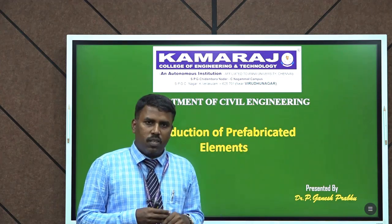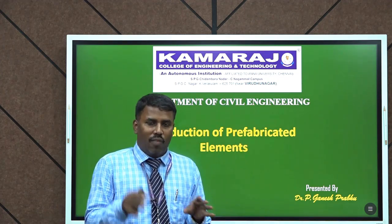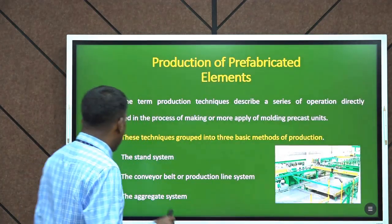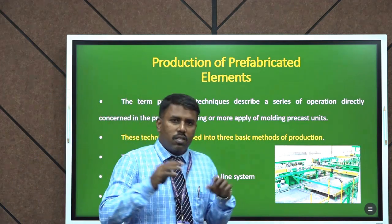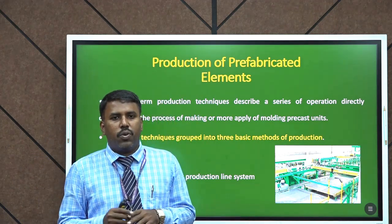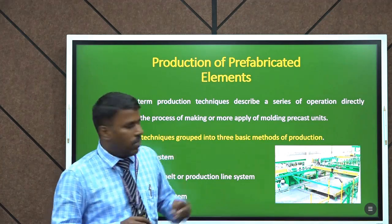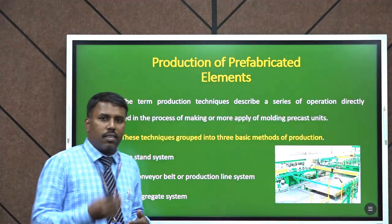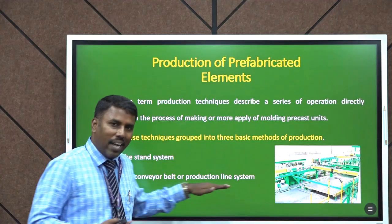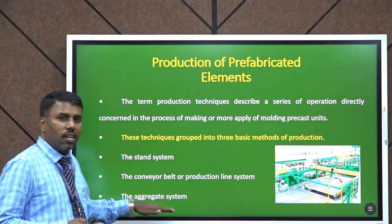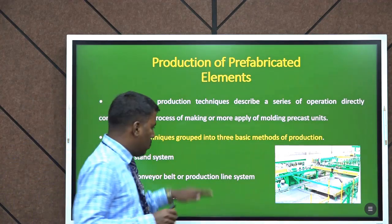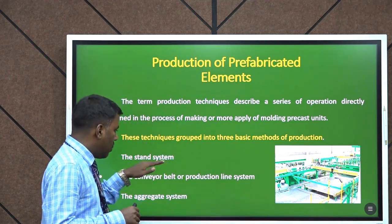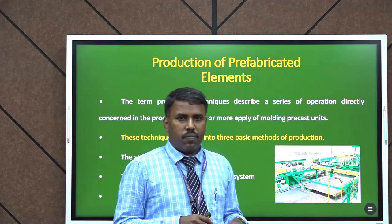This is a very important topic that all civil engineers should be aware about — how the precast elements are produced. The precast elements are produced in three methods: first one is the stand system, second one is the conveyor method or production line system, and the third one is the aggregate system.